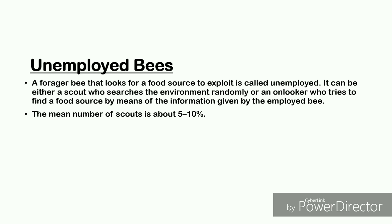The most important part of the hive with respect to exchanging information is the dancing area. Communication among bees related to the quality of food sources occurs in the dancing area. The related dance is called the waggle dance. Since information about all current rich sources is available to an onlooker on the dance floor, she can watch numerous dances and chooses to employ herself with a greater probability toward more profitable sources. Employed foragers share their information with a probability proportional to the profitability of the food source, and waggle dancing is longer in duration for more profitable sources.